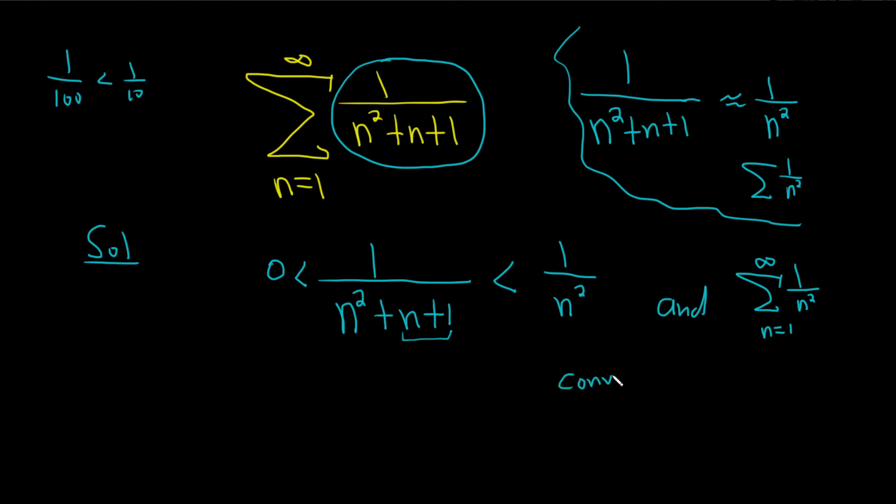The sum from 1 to infinity of 1 over n squared converges by the p-test. What's p? p is this number here. So p is 2, which is bigger than 1. The p-test says that a p-series, the sum of 1 over n to the p, will converge if p is bigger than 1 and will diverge if p is less than or equal to 1.